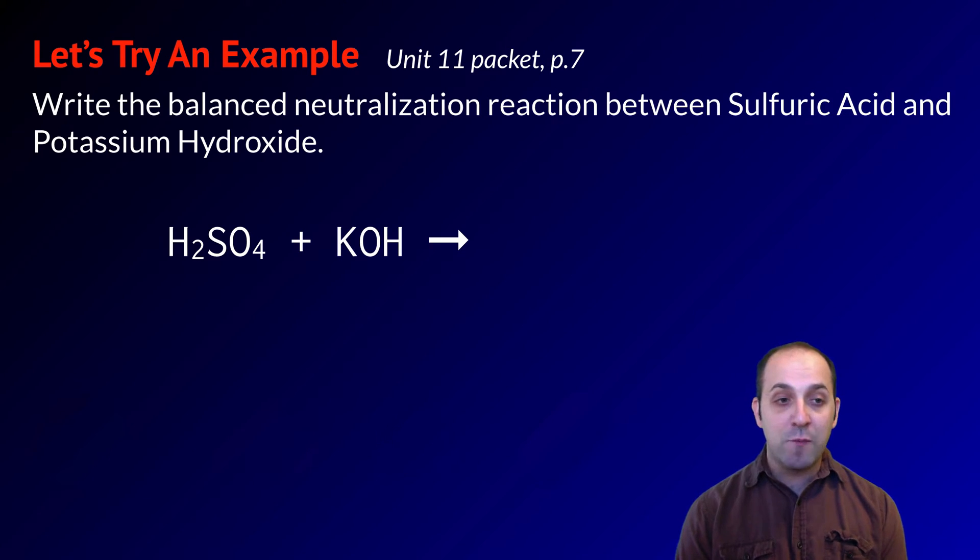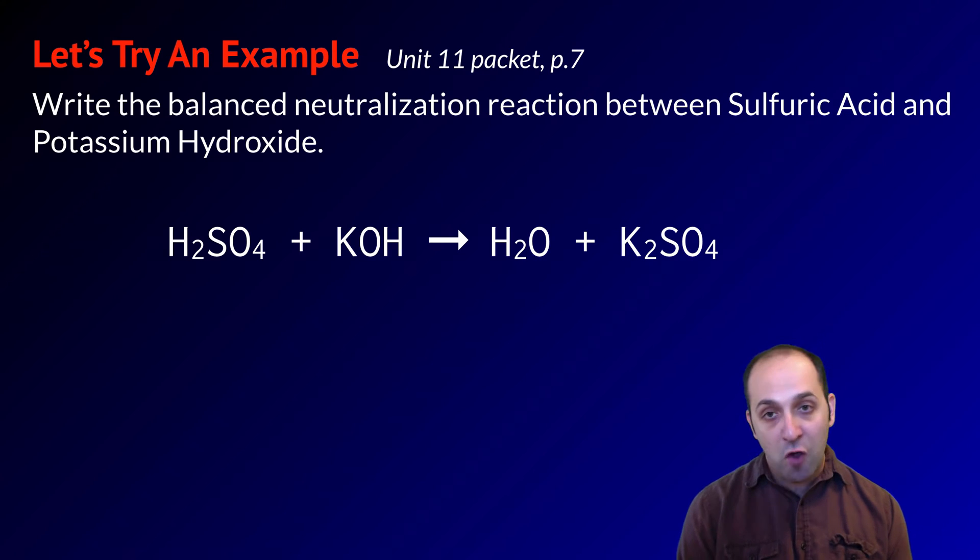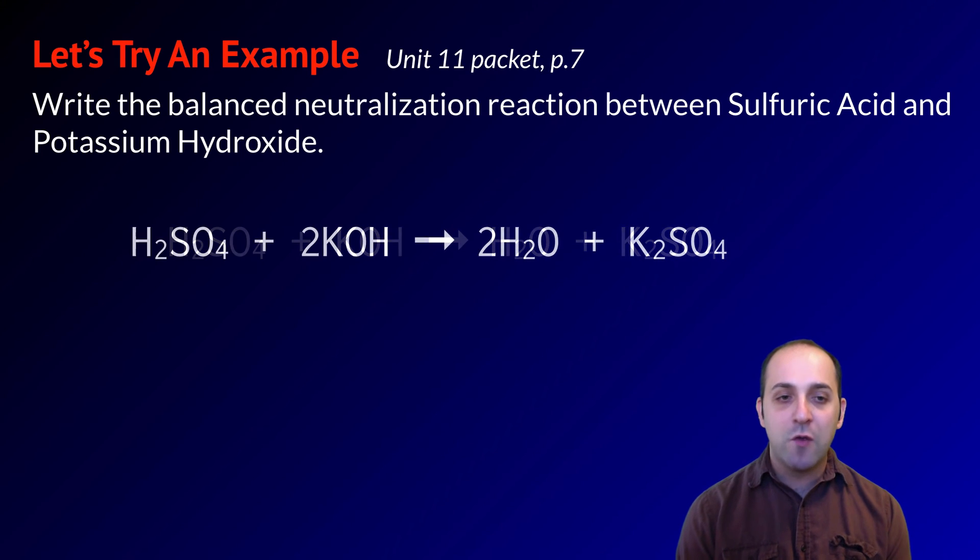So I'm going to figure out the formulas for my substances. Sulfuric acid is H2SO4, potassium hydroxide is KOH. I know that I'm going to produce water and a salt, so that's going to be H2O, and my salt is going to be made out of the cation of my base and the anion of my acid, potassium and sulfate. Sulfate is minus two, potassium is positive one, so the formula for that salt is K2SO4. Now I need to figure out if this equation is balanced. It is not balanced, so in order to balance it, I need to put a two in front of the KOH, which is going to produce two water molecules as a result.